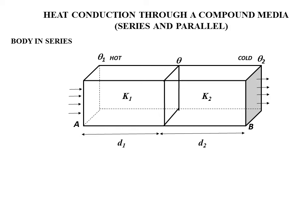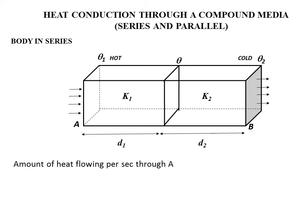Consider this material — we are transferring heat from theta 1 to theta 2. The amount of heat flowing per second through A is equal to K1, the thermal conductivity, times A, the area, times (theta 1 minus theta), divided by D1, the distance.